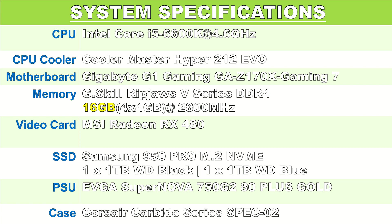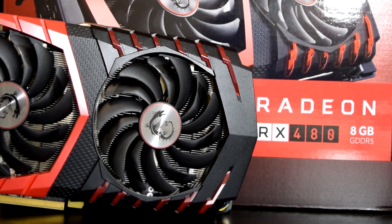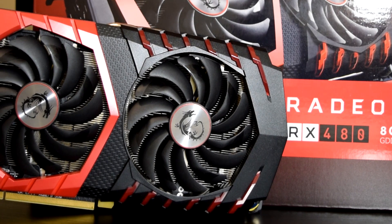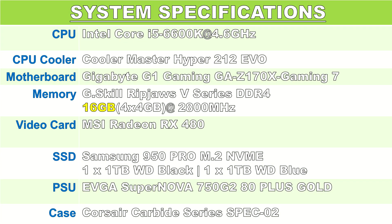Keeping the CPU cool I've got a Cooler Master Hyper 212 EVO with two Corsair SP120 fans in a push-pull configuration. For RAM I have 16GB of G.Skill Ripjaws V-Series DDR4 clocked at 2800MHz. The motherboard is a Gigabyte G1 Gaming GA-Z170X-Gaming7. For storage I have a Samsung 950 Pro M.2 NVMe SSD as the boot drive and two Western Digital 1TB hard drives — a Caviar Black and a Caviar Blue. The graphics card is an MSI RX 480 Gaming X 8GB, and the system is powered by an EVGA 750W G2 PSU in a Corsair Spec 02 case.